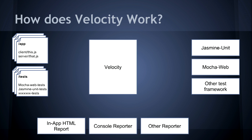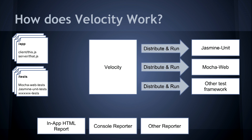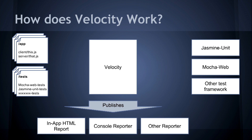How does Velocity work? All the different testing frameworks have a common way of reporting test results, and all the test reports have a common way of consuming those results from Velocity. Everything is a package, and it's all reactive. Velocity sits in the middle — it watches your app code and your test directory. As soon as there's a change, it distributes your tests to the correct framework, which runs them and returns results. Velocity then publishes those results to various reporters: an in-app HTML reporter, a console reporter, and X-unit reporters for continuous integration servers.